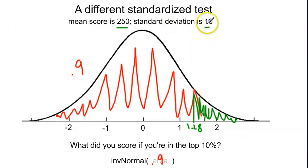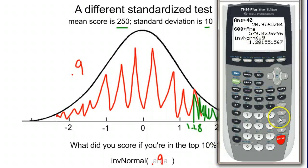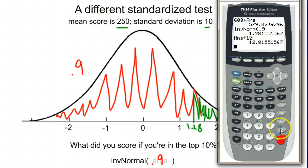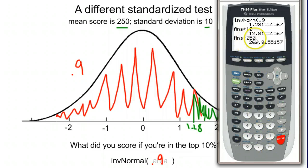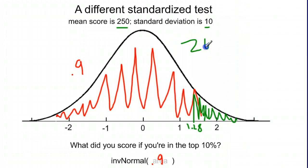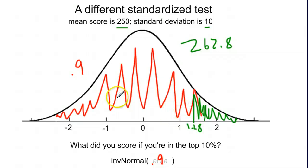The standard deviation is 10 and we're 1.28 of them above the average. Multiplying gives 12.8 points above average. Adding the mean of 250 gives 262.8. So 262.8 points is the score you would need to be in the top 10% on this standardized test. Inverse normal always takes the area to the left of a given value and outputs a z-score.